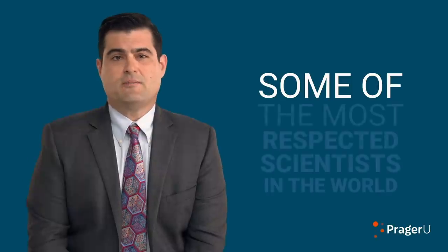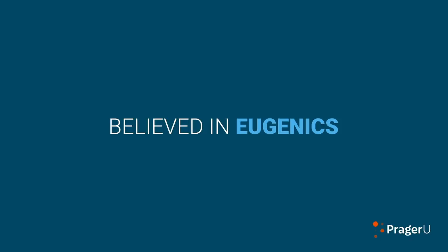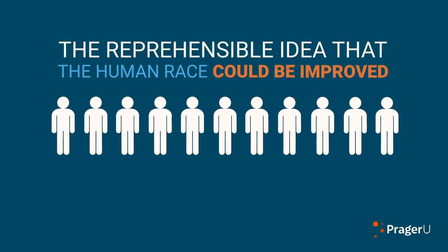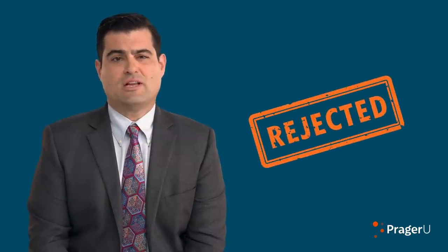In the 20th century, some of the most respected scientists in the world, including Nobel Prize winners, believed in eugenics—the reprehensible idea that the human race could be improved by selective breeding. The National Academy of Sciences, the American Medical Association, and the Rockefeller Foundation supported it. By the middle of the century, it had been thoroughly rejected as quackery. No reputable scientist would have anything to do with this idea.